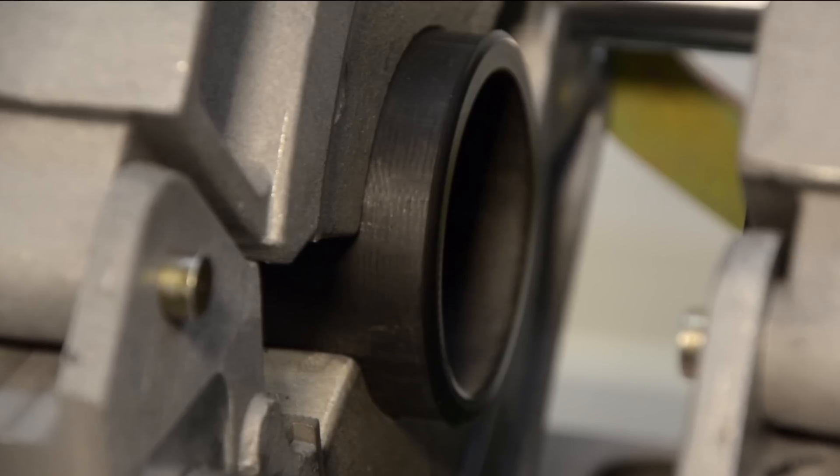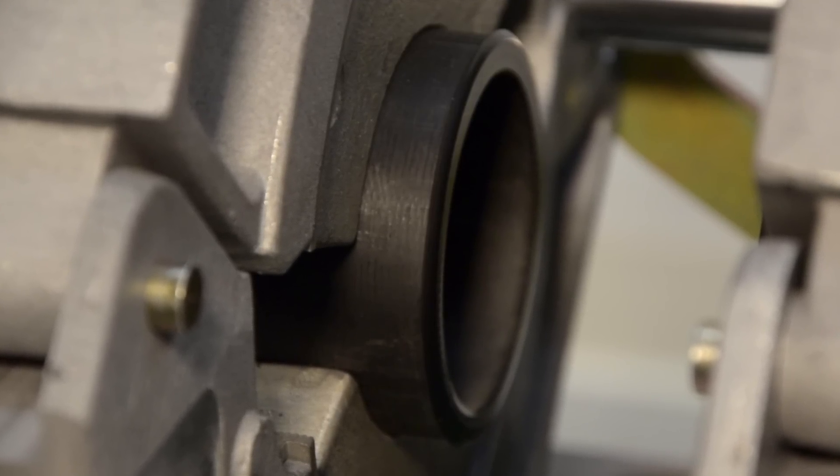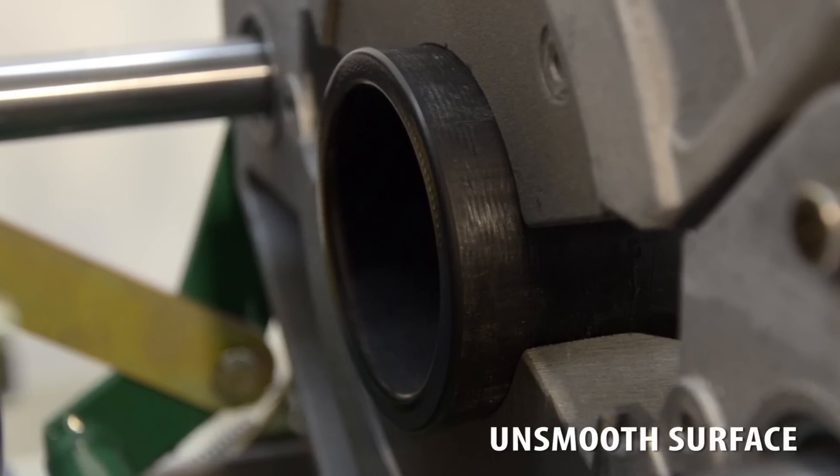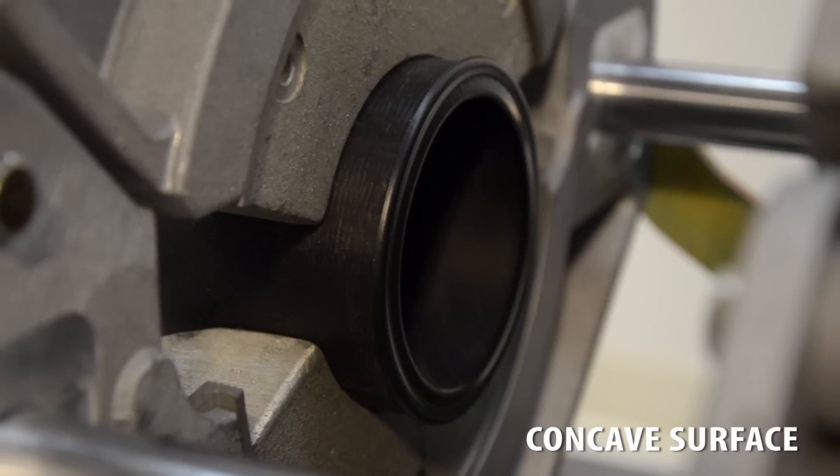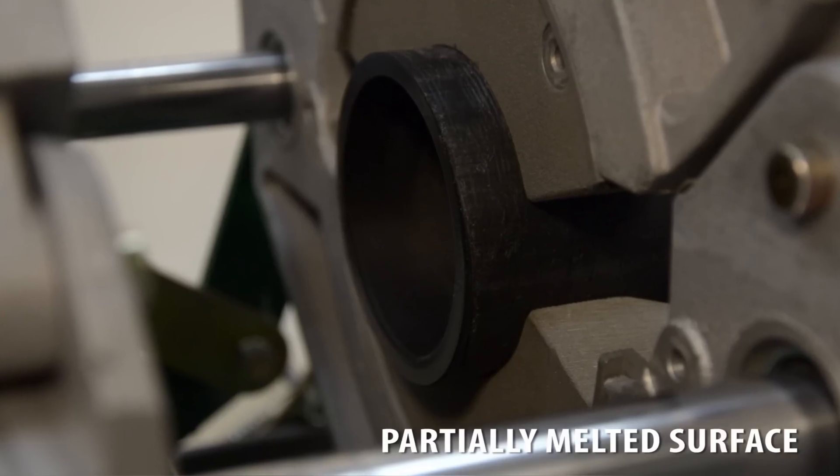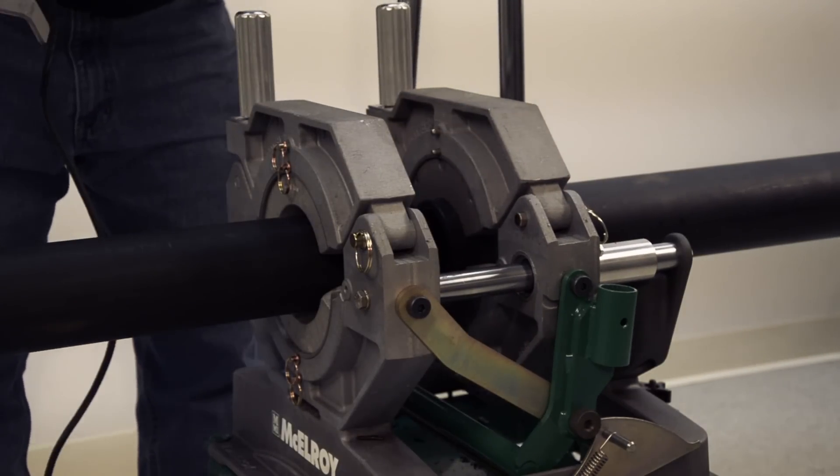The visual indications of a good melt are a flat and smooth surface with no unmelted areas. If a concave, unsmooth, or partially unmelted surface is noticed, or if any of the material is stuck to the heater, something has gone wrong during the heat soak and the fusion process must stop. As you are completing the visual check, begin closing the carriage.